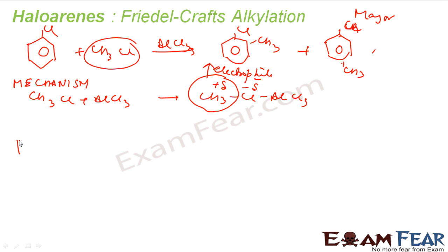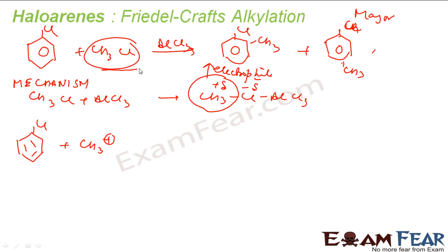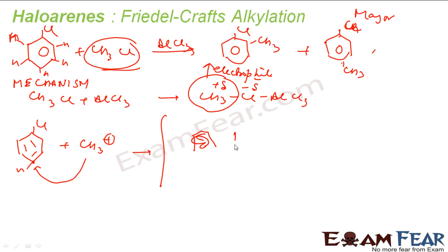Looking at the reaction mechanism: I have a Cl on the ring, and the CH3+ cation — which we got from CH3Cl and AlCl3 — will hit a carbon on the ring. There is hydrogen everywhere on the ring. This CH3+ cation will hit this carbon and form an intermediate. This bond will break into negative and positive; the negative will combine with the CH3 forming a bond, and the positive charge will remain on the ring carbon. We can also draw the resonating structures.